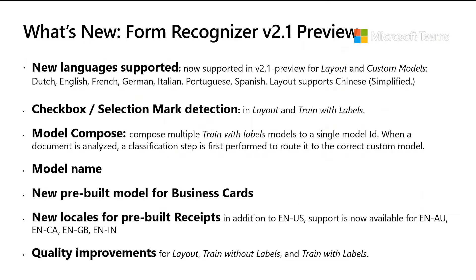We also have the Form Recognizer V2.1 public preview now available, which has a bunch of new features. The first is language support — we've gone from just supporting English to supporting Dutch, English, French, German, Italian, Portuguese, and Spanish. The layout model, which is a pre-built model for text and table extraction, will also support Chinese.